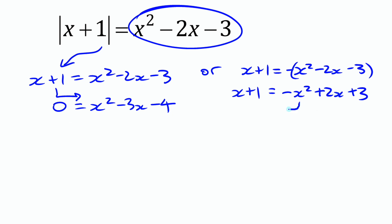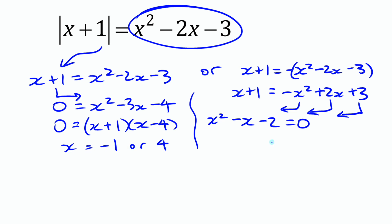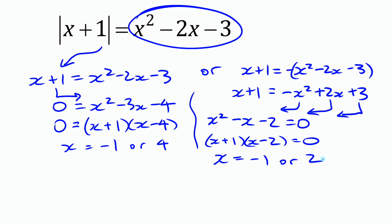For the second quadratic, moving the x squared term to the left gives x squared minus x minus 2 equals 0. The first quadratic factors as (x+1)(x-4), giving x equals negative 1 or 4. The second factors as (x+1)(x-2), giving x equals negative 1 or 2. We appear to have four values, but negative 1 appears twice, so we have three distinct values to check: negative 1, 2, and 4.